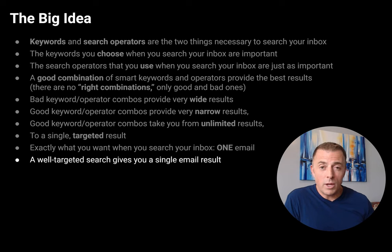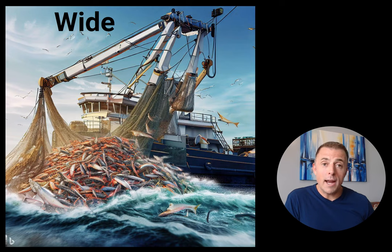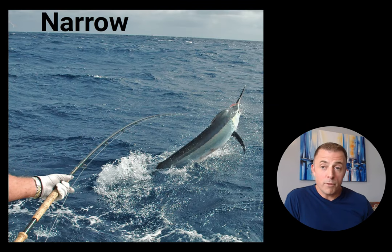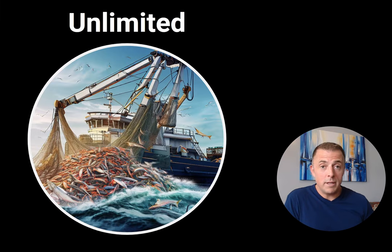This is exactly what you want when you search your inbox: one email. A well-targeted search gives you a single email result. It's like a fishing trawler versus a fishing pole. A very wide search gives you a lot of results — some you don't want or need, like a trawler hauling in tons and tons of fish. Versus a very narrow search query that gives you a very narrow result — that single email you're looking for. Unlimited versus targeted. That's the difference.